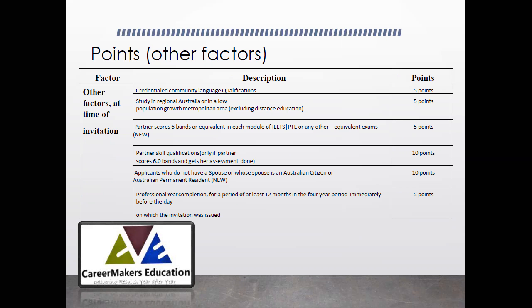A new addition introduced from November 2019 is that you also get points based on marital status. If you are single, you get 10 points. If you are married and your spouse also gives IELTS or PTE and scores 6 bands or equivalent, you get 5 points. Additionally, if you also get the skills assessment of your spouse done, you get an additional 10 points.